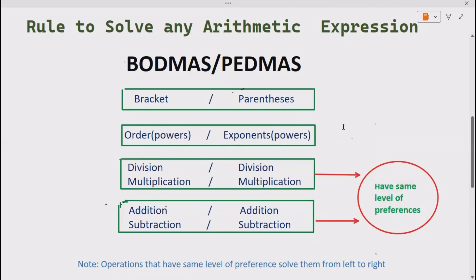It means whenever you are solving an arithmetic expression in which both division and multiplication come at the same time, solve that operation first that comes first going from left to right. Same is true for addition subtraction as well.